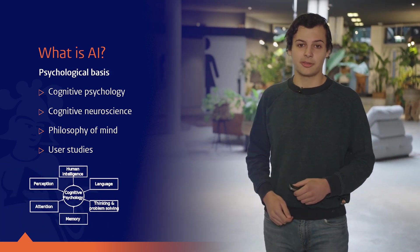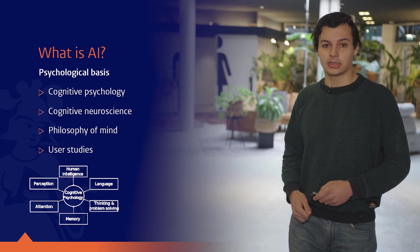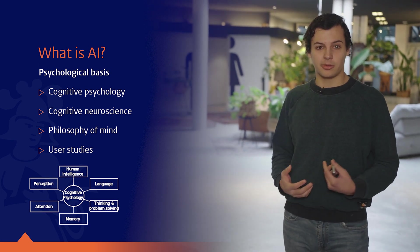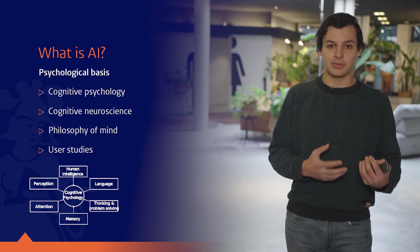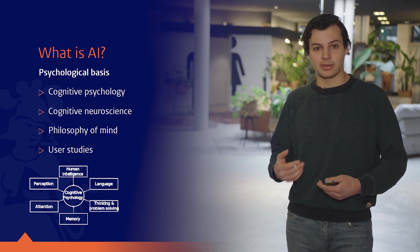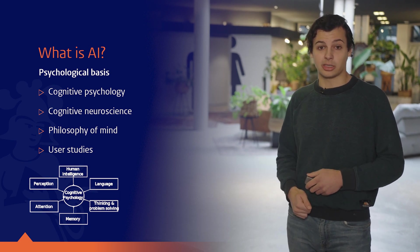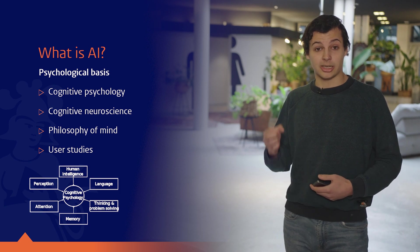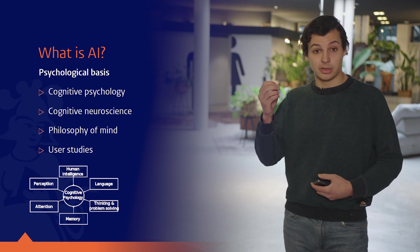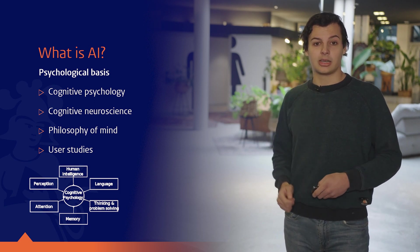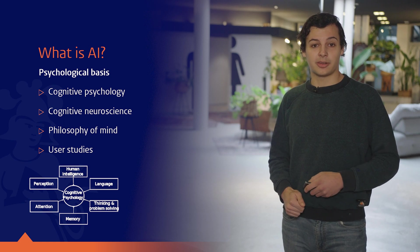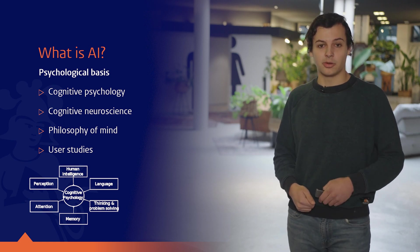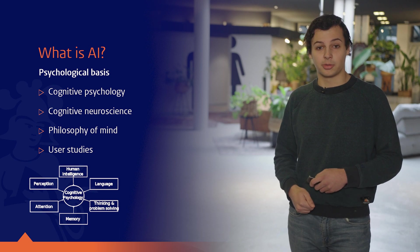And then finally there's the psychological basis. This part deals with how AI is connected to our brain. So for example cognitive psychology, cognitive neuroscience which is about the neurons firing in our brain, the philosophy of mind, and user studies which we need to do for research.